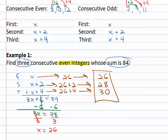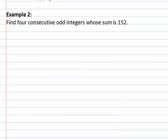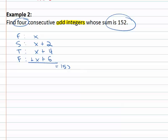Let's try another example. Let's find four consecutive odd integers whose sum is 152. There's four of them and they are odd integers. So the first one we're going to call x, the second one is x plus 2. The space between the odd integers is 2. The third is x plus 4, and it wants four of them this time so the fourth is x plus 6, and if we add them all up we're told the sum should equal 152.